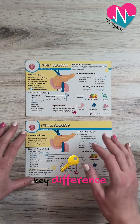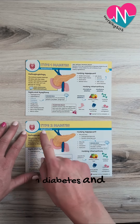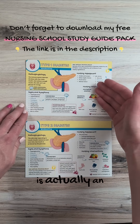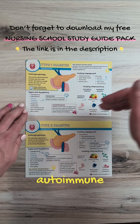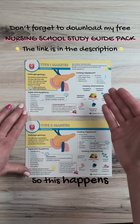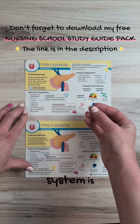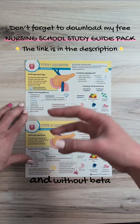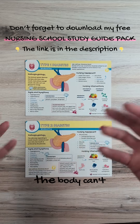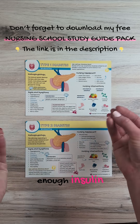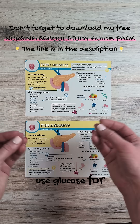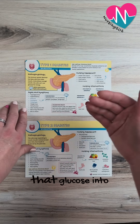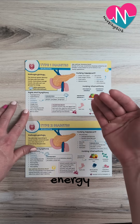Let's talk about a key difference between type 1 diabetes and type 2 diabetes. Type 1 diabetes is actually an autoimmune disorder. This happens when the immune system is destroying the beta cells in the body. And without beta cells, the body can't produce enough insulin, so the cells can't use glucose for energy and unlock those cells to get that glucose in to use for energy.